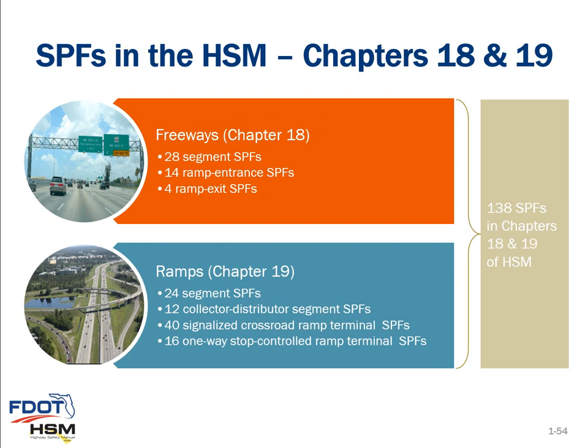In Chapters 18 and 19, more recently released for freeways and ramps, there are many more safety performance functions — 28 different segment-level SPFs for freeways, plus SPFs for ramp entrances, ramp exits, collector-distributor roads, and other facility types. In these two chapters, there are a total of 138 safety performance functions representing different numbers of lanes and calibration situations. These will be discussed later in webinars seven and eight of this series.